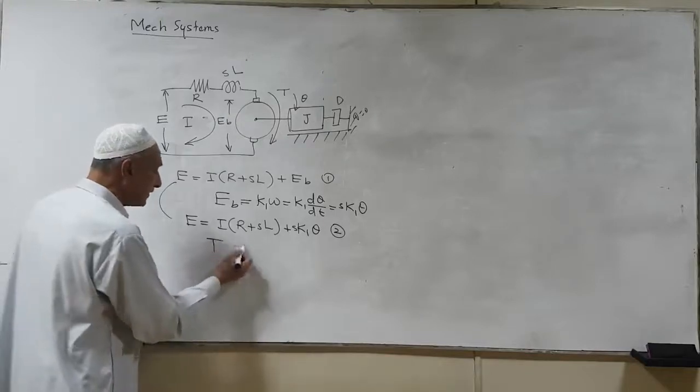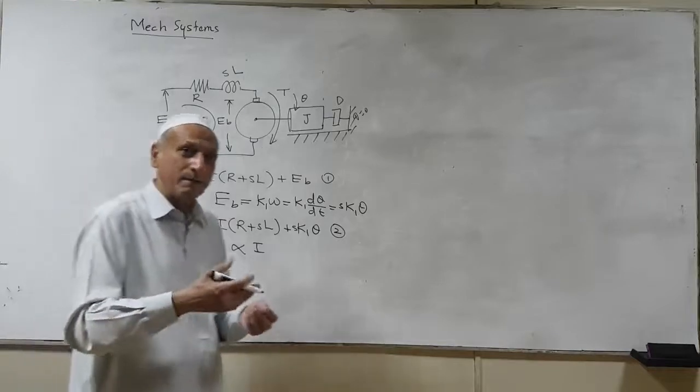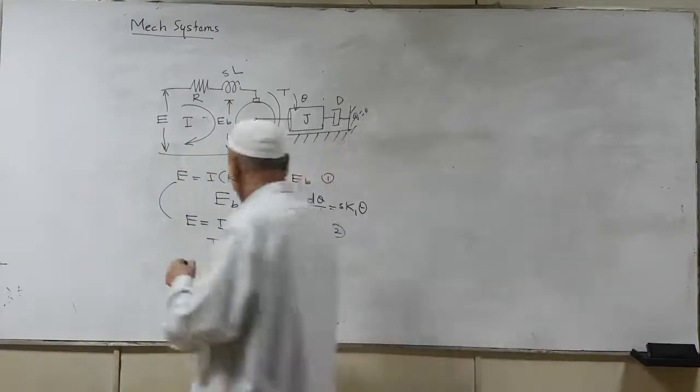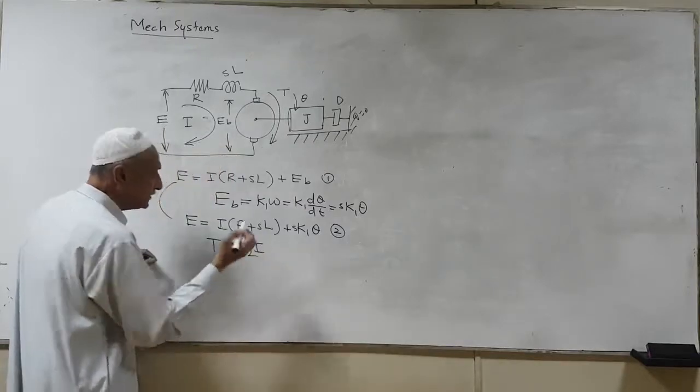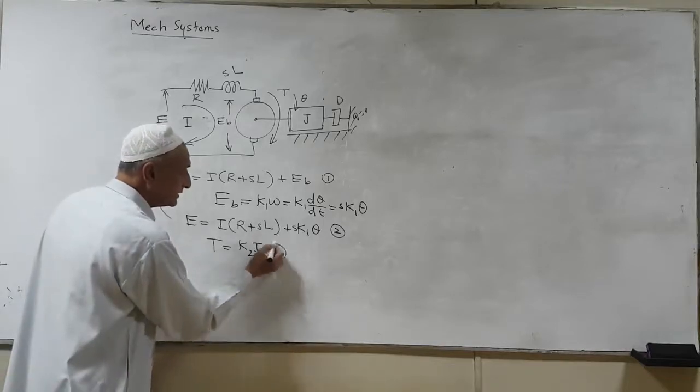Now, mechanical torque, remember, is proportional to the current. Greater the current, greater is the magnetic field in the conductor, and eventually greater is the torque. So this is changed into equality by introducing a constant of proportionality, K2. This is equation 3.